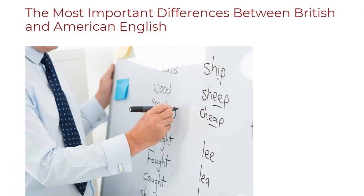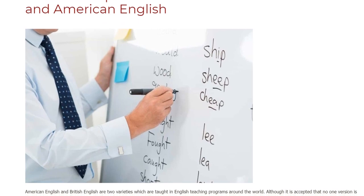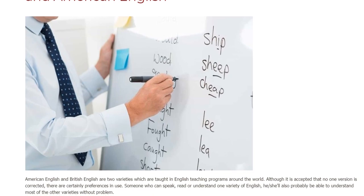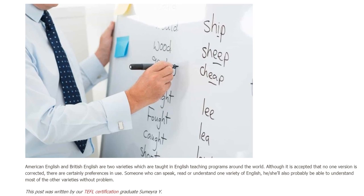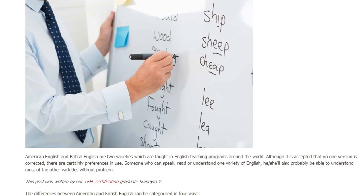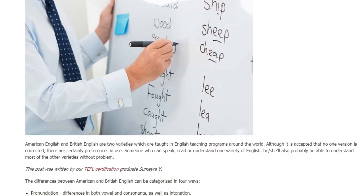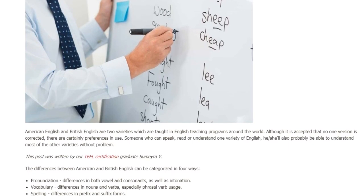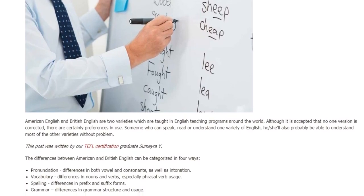American English and British English are two varieties which are taught in English teaching programs around the world. Although it is accepted that no version is incorrect, there are certainly preferences in use. Someone who can speak, read, or understand one variety of English will also probably be able to understand most of the other varieties without problem. The differences between American and British English can be categorized in four ways.